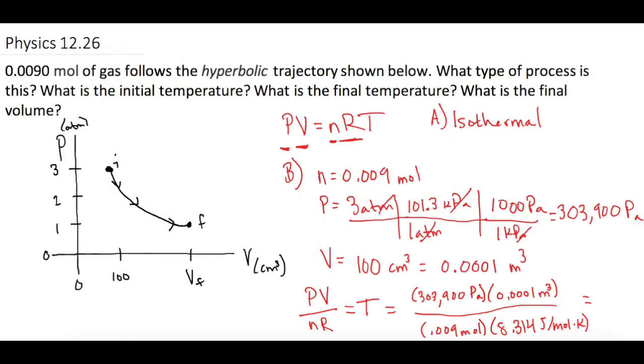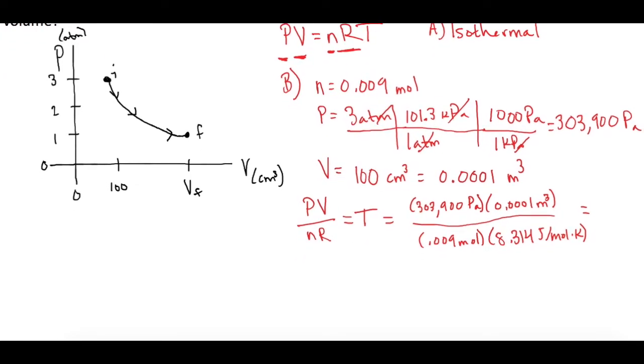And that gives us an initial temperature of 406.3 kelvin minus 273 and we have 133 degrees Celsius or rounded 130.